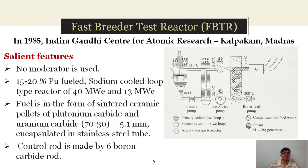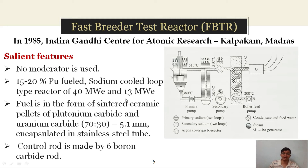Let us discuss India's first fast breeder test reactor, which was installed in 1985 at the Indira Gandhi Centre for Atomic Research, Kalpakam, Madras. The salient features of this reactor are: no moderator is used; it is a loop type nuclear reactor; it is fueled with 15 to 20% enriched plutonium fuel; and it is a liquid sodium cooled loop type reactor. There are two plants — one with a capacity of 40 megawatts and the first one installed had a capacity of 13 megawatts.